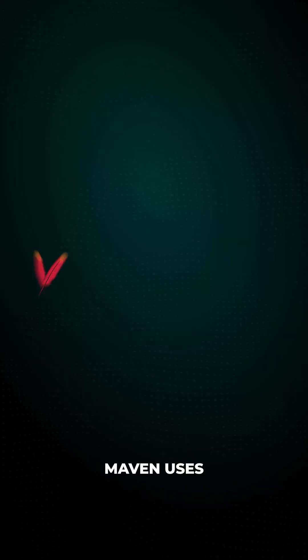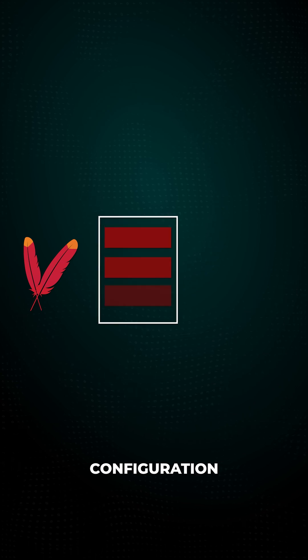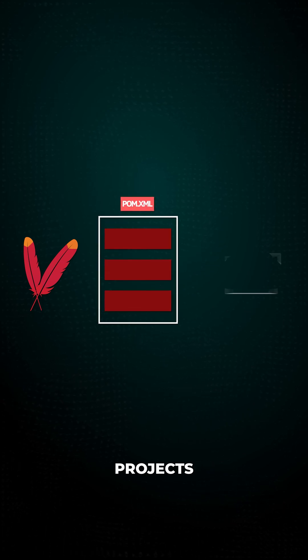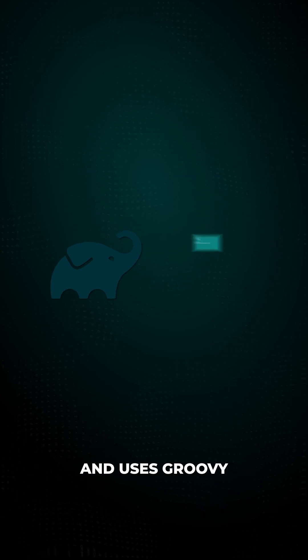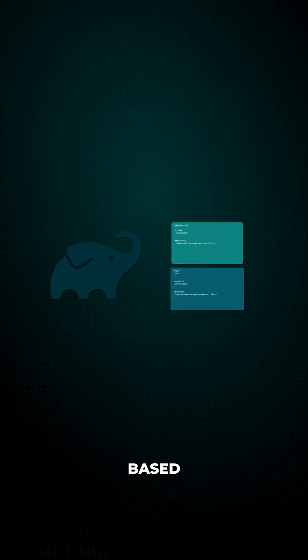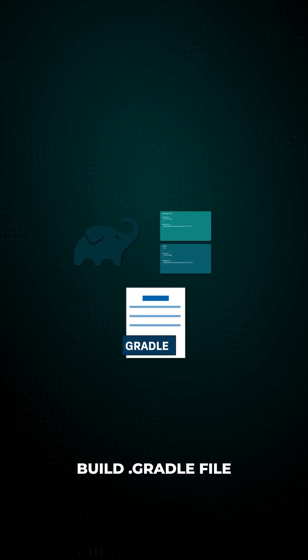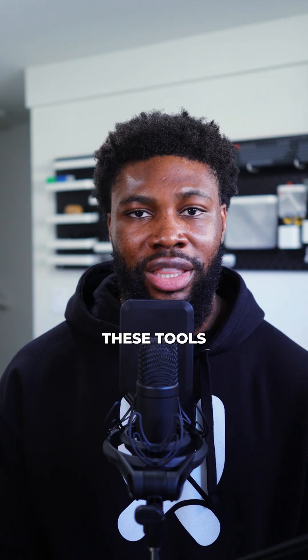This is where build tools come in. Maven uses an XML-based configuration in a POM file to manage dependencies and build projects in a structured way. Gradle is more flexible and uses Groovy or Kotlin-based configuration in a build.gradle file and is known for faster builds.